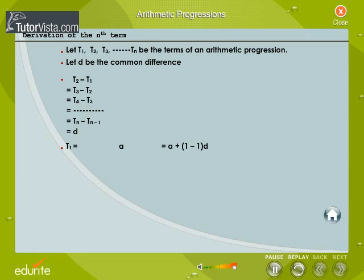The first term t1 is a and it can be written as a plus 1 minus 1 into d. Following the same pattern we can write the second term t2 as a plus 2 minus 1 into d.